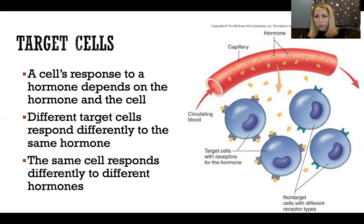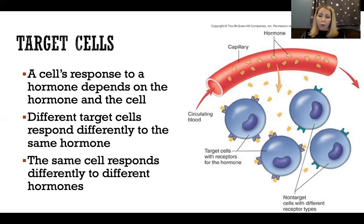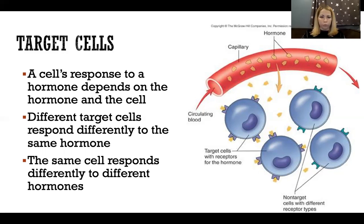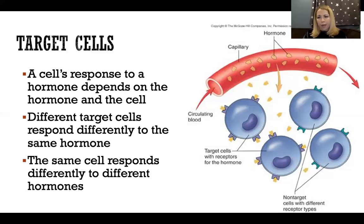The flip side is also true: the same cell will respond differently to many different hormones. One target cell could be a target cell for ten different hormones, meaning one cell can have receptors for many different hormones and will respond differently to each of those hormones. So the action of a hormone depends on the hormone itself and the cells that it's acting on.